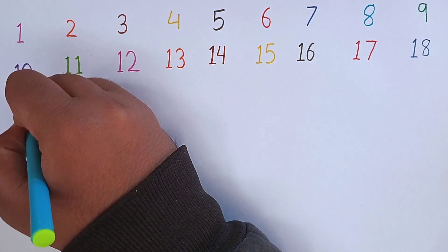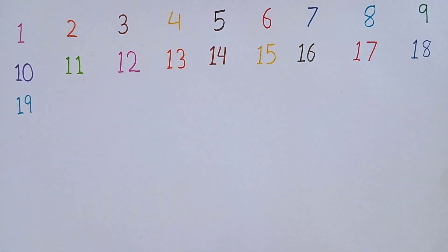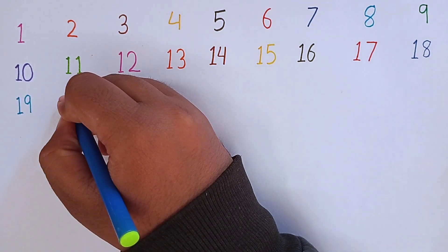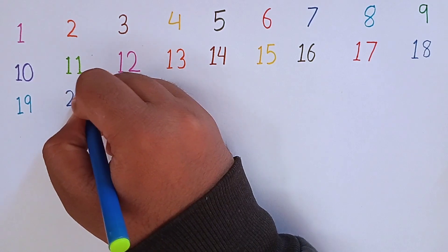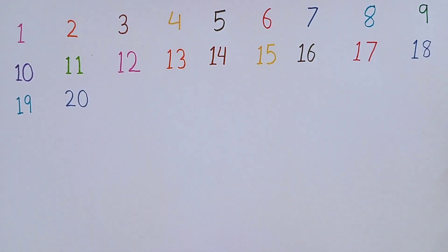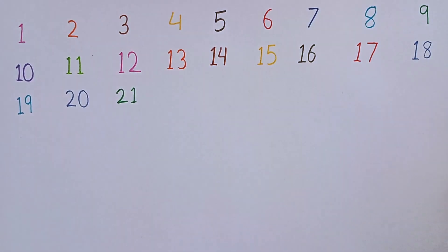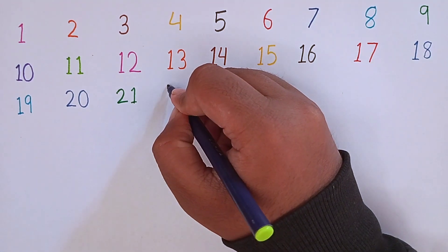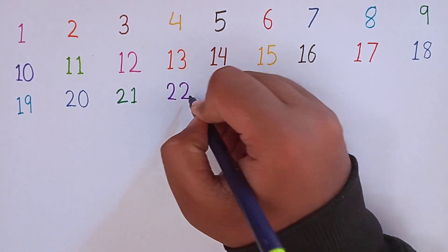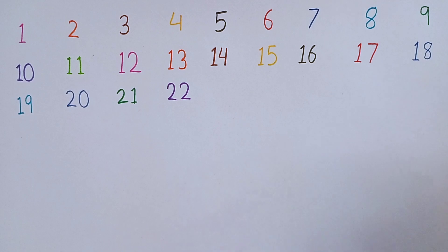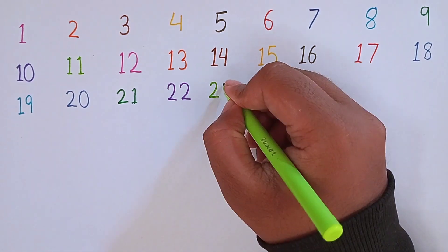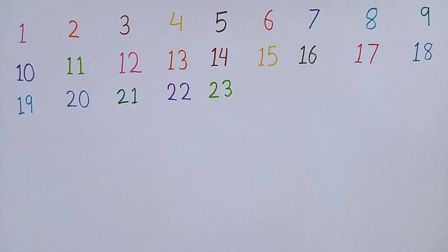After 18, I am going to write 19. 1, 9 — 19. This is 19. After 19, the next number will be 20. 2, 0 — 20. This is 20. After 20, I will write 21. 2, 1 — 21. This is 21. After 21, the next number will be 22. 2, 2 — 22. This is 22. After 22, the next number will be 23. This is 23.